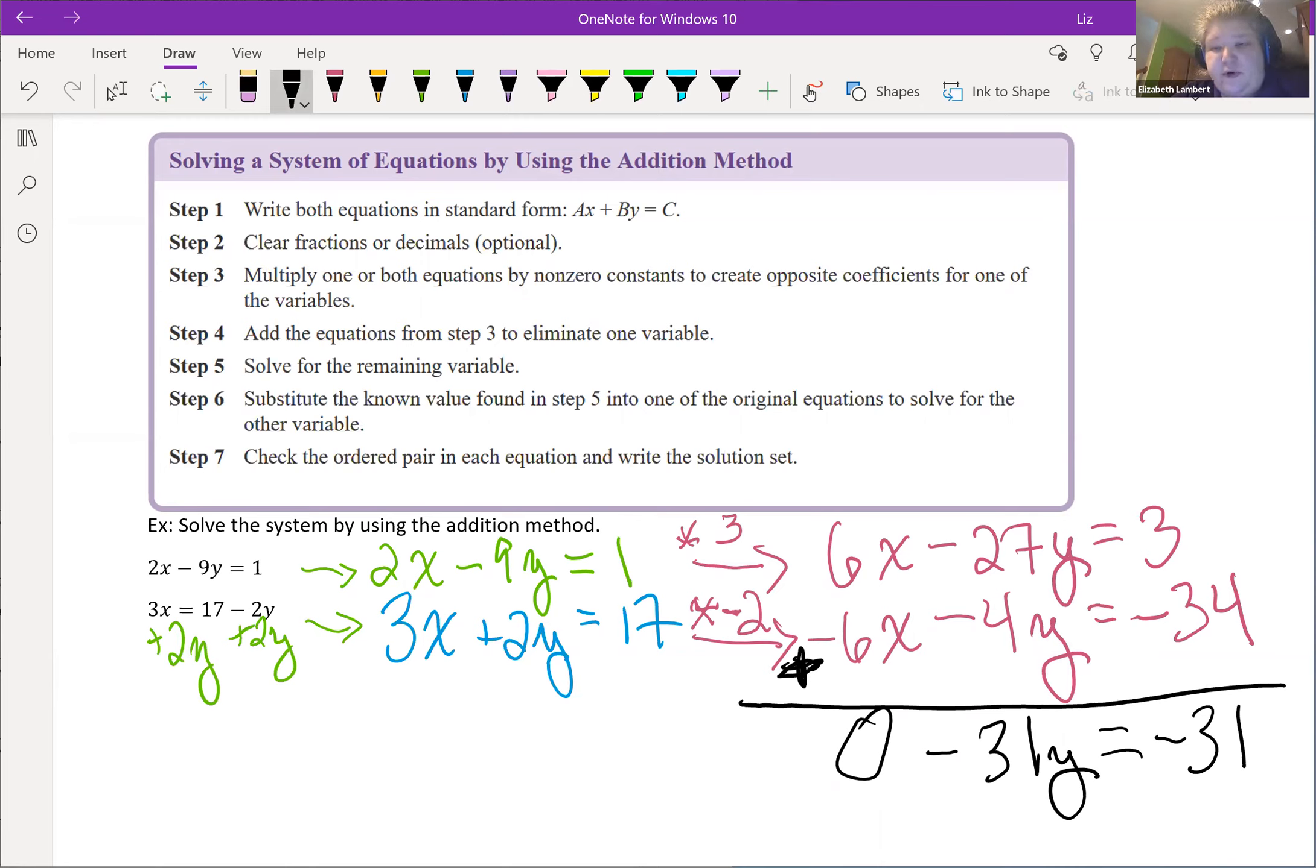The negative 27y's minus 4 more y's gets more negative, negative 31y. Then 3 minus 34 moves us a little bit closer back towards 0, and negative 31.